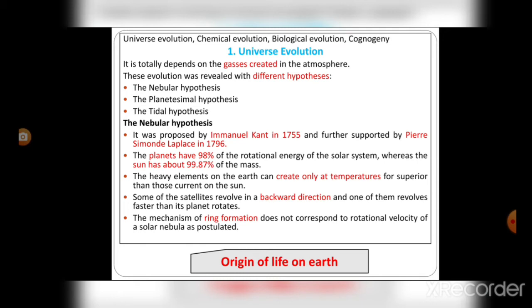Some of the satellites revolve in a backward direction and one of them revolves faster than its planet rotates. The mechanism of ring formation does not correspond to rotational velocity of solar nebula as postulated.